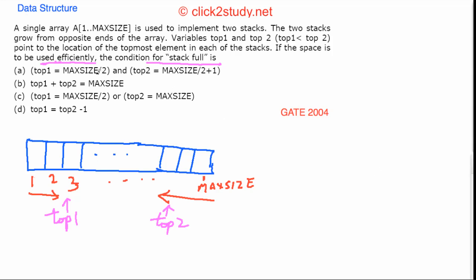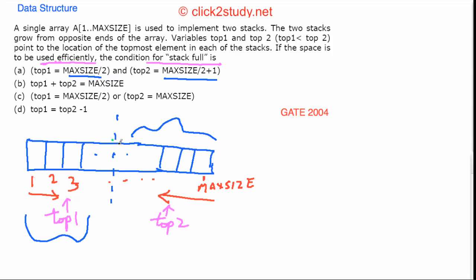Looking at the options, some are expressed in terms of half of max size. Option one gives half the space to one stack and the other half to the other. The problem with that is: suppose you have filled one stack all the way to its half-size limit, but the other stack has only one or two elements — you still cannot push more into the full stack, even though there's free space. That's inefficient.